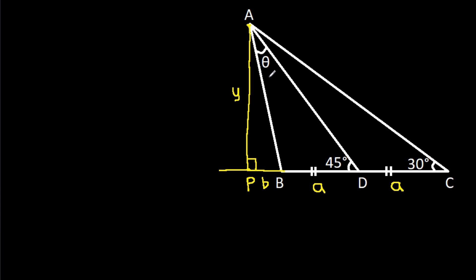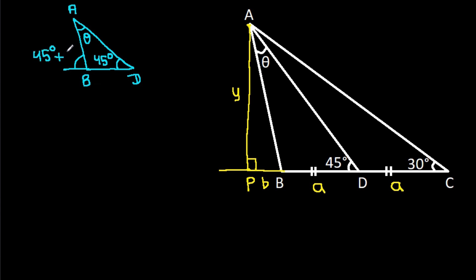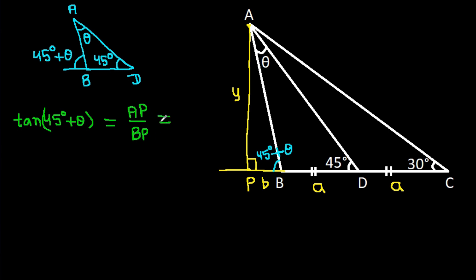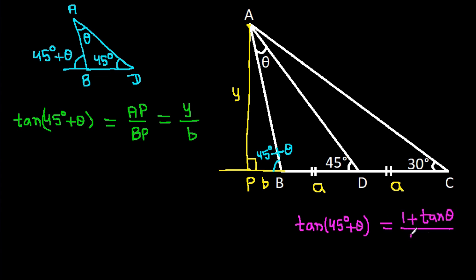Now, in triangle ABD, angle ABD is theta, angle ADB is 45 degrees, so angle ABP is 45 degrees plus theta. Therefore tan(45 degrees plus theta) equals (1 plus tan theta) over (1 minus tan theta).